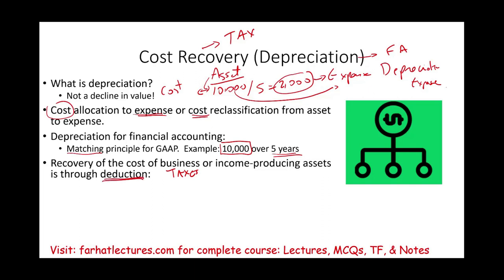We like deductions in taxes. Why? Because deductions lower taxable income, which lowers our taxes — meaning less money to the government and more money in our pocket. That's why we like depreciation. So depreciation or cost recovery is taken to save on our taxes.